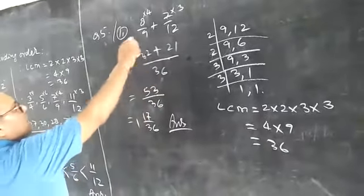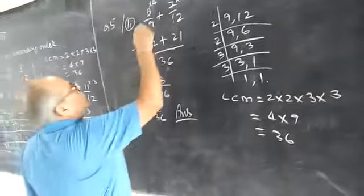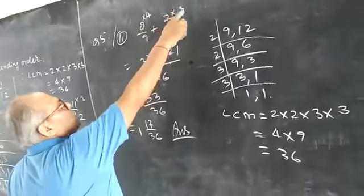LCM is 36. 9 divides 36, that is 4, 8 multiplied by 4. 12 times 3 is 36, 7 into 3.